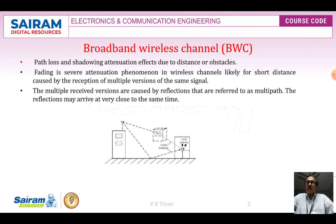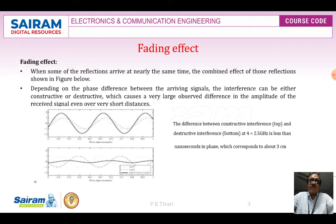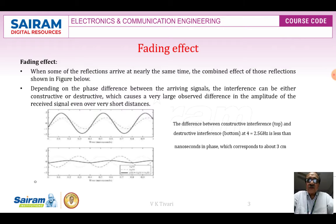The multiple received reflected versions may arrive at very close to the same time — the delay fading effect. When reflections arrive at nearly the same time, at t and t plus delta t, the reflection arrives late due to scattering effects or long distances traveled. The combined effect of these reflections depends on the phase difference between arriving signals. Interference can be either constructive or destructive, causing very large differences in amplitude.